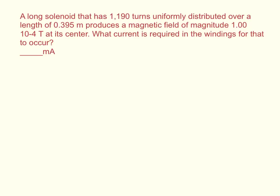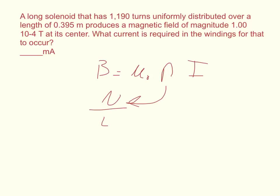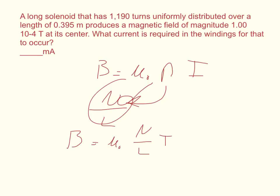We're going to use the equation for the magnetic field at the center of a solenoid: B equals the permeability of free space times N times I, where N is equal to the number of turns per unit length. So we'll replace N back in, giving B equals mu naught times N over L times I, and we're going to solve for I.